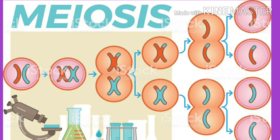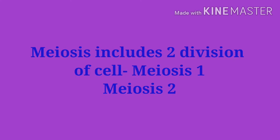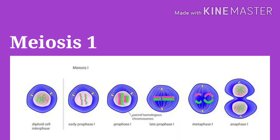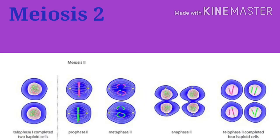Meiosis also differs from the mother cell. Meiosis includes two divisions of cell. Meiosis 1 is the heterotypic division — it leads to reduction in chromosome numbers. Division of centromere does not occur in meiosis 1; only segregation of homologous chromosomes takes place. Meiosis 2 is the homotypic division; it doesn't lead to any change in chromosome number.